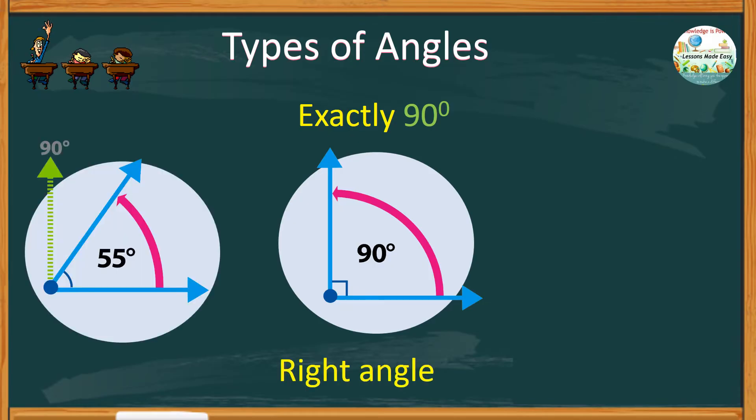Check out this other angle. If one side of a right angle bends inwards, making the corner less than 90 degrees, we call this an acute angle.